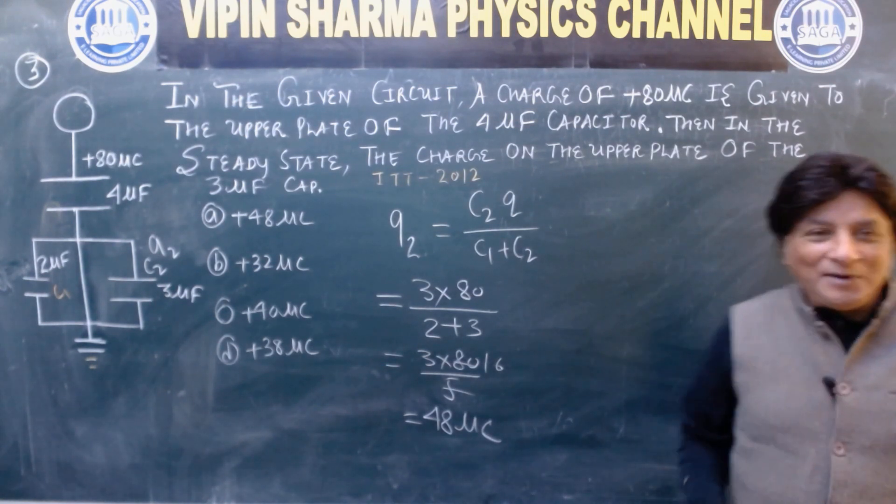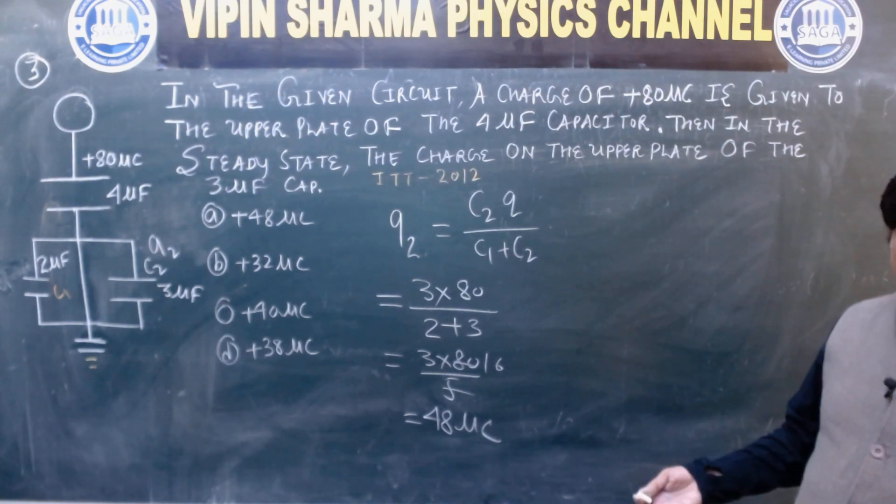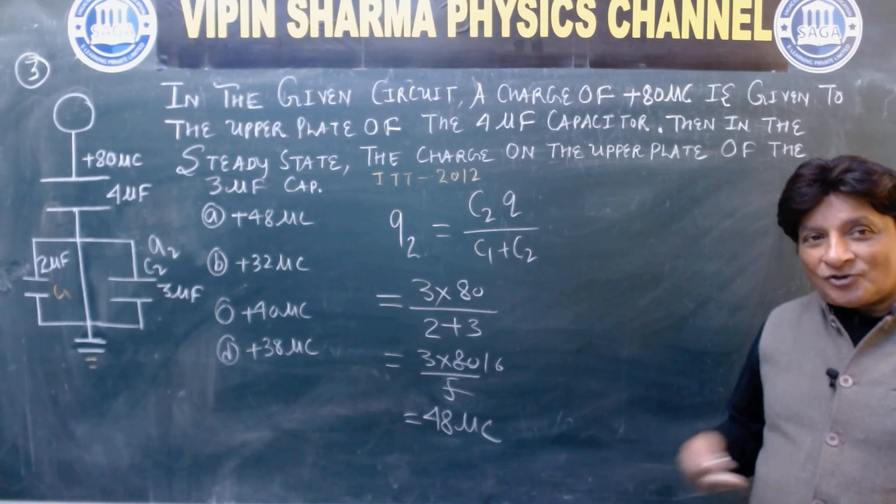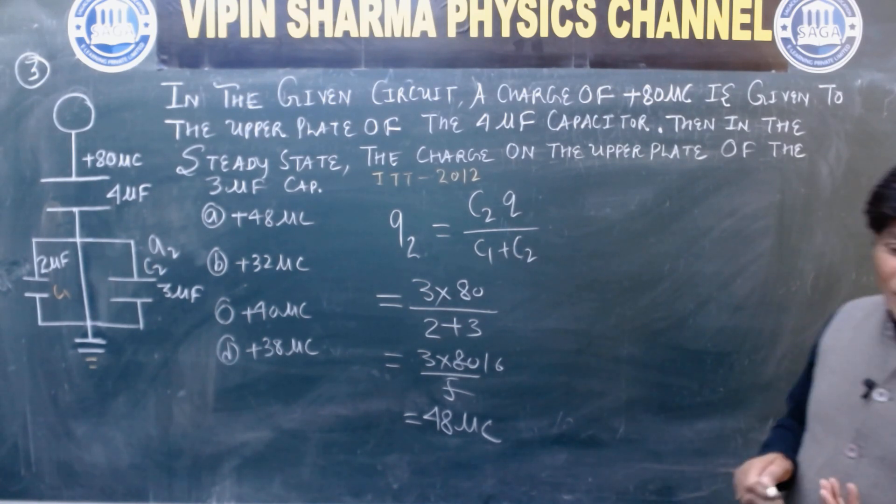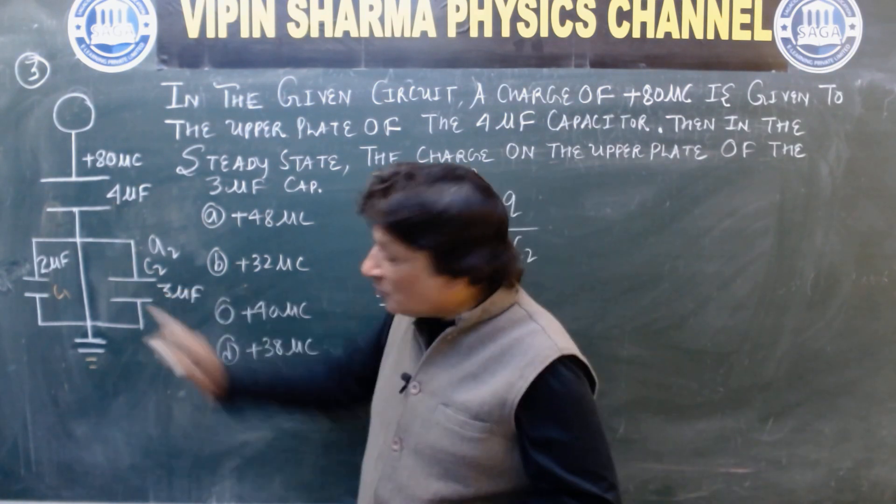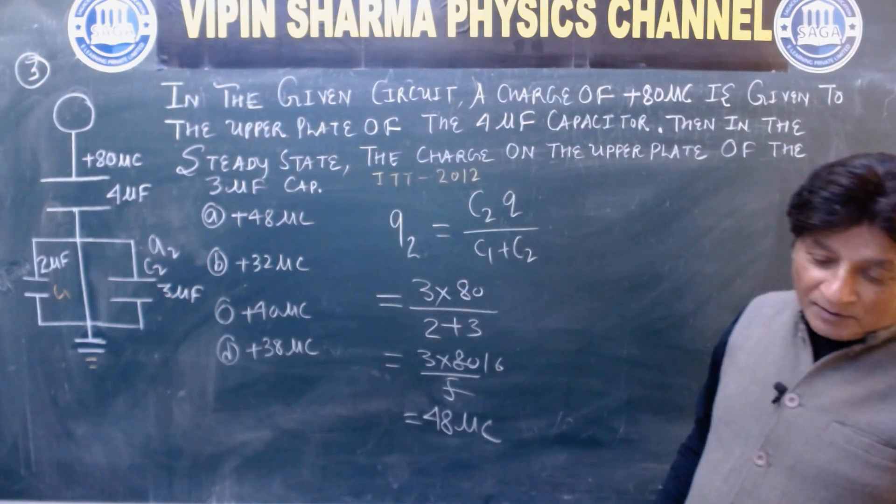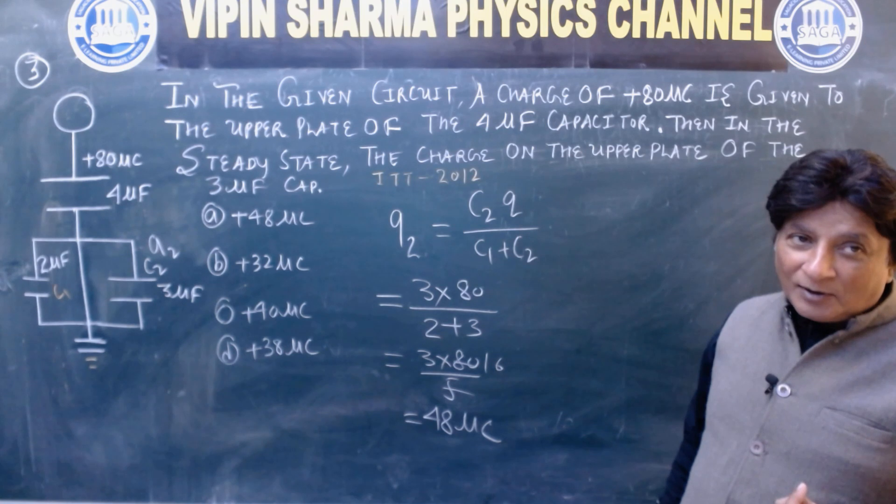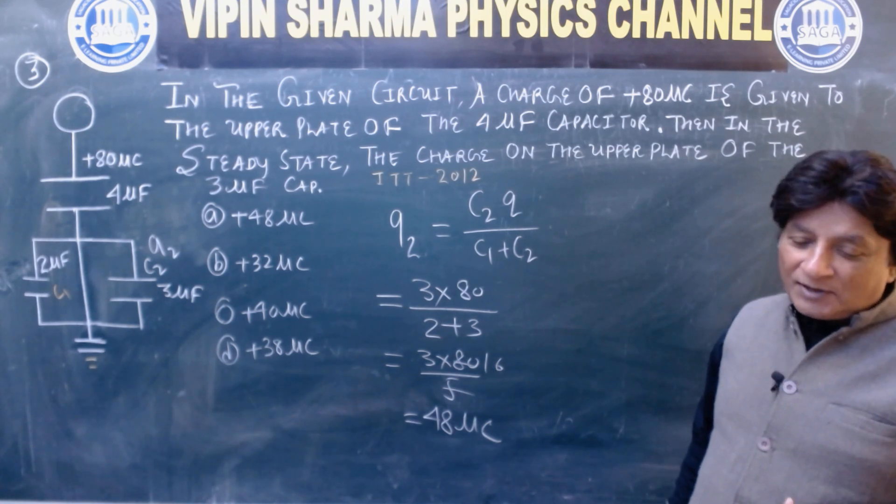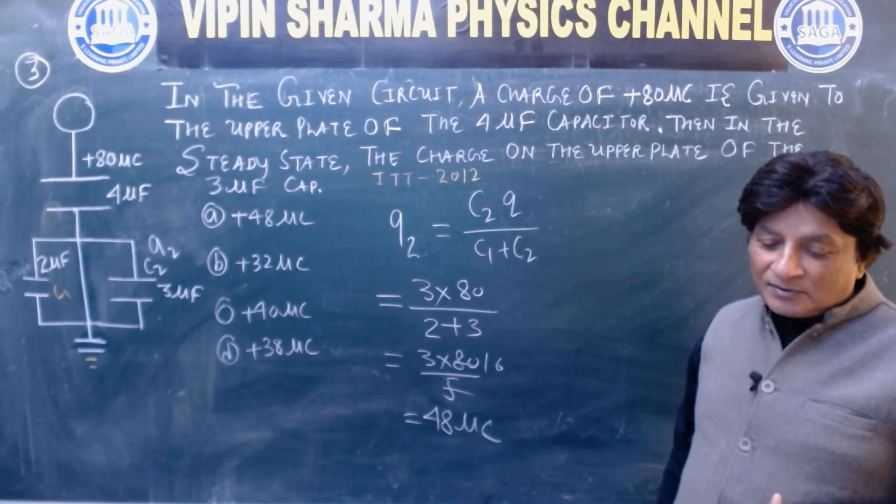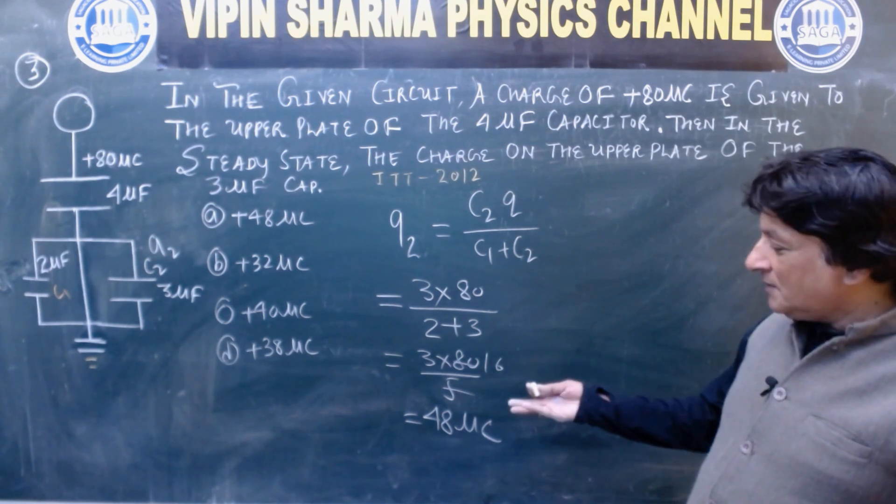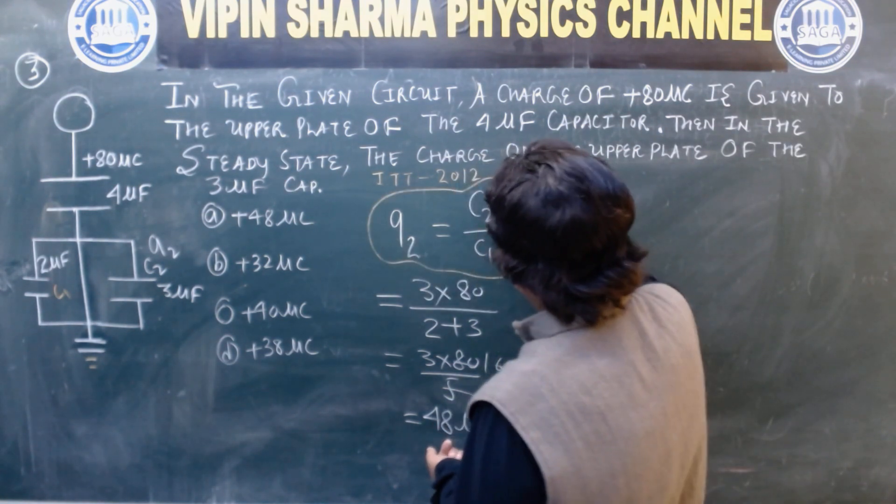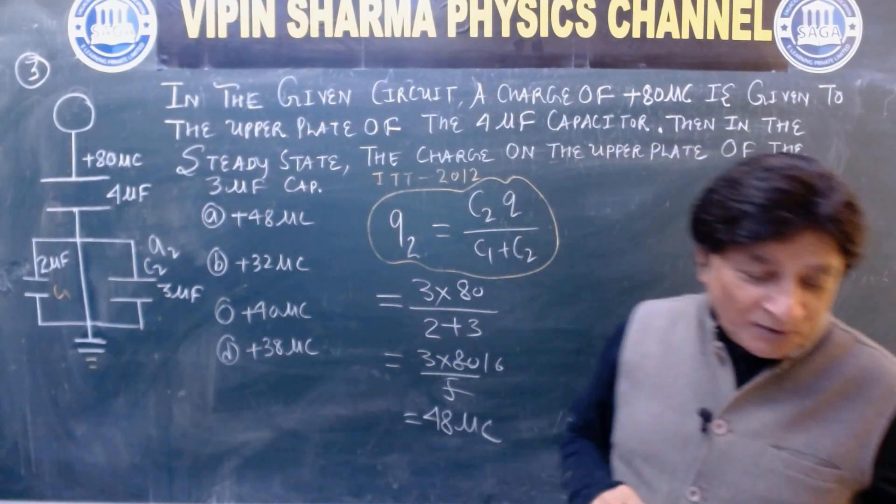Now see very carefully. I have solved this. How much time did it take? Less than, I mean in exam, just in seconds you solve this. See it's like this, C1 and C2 are in parallel. When C1, C2 are in parallel, then Q2, the charge on 3 microfarad, total charge Q. So what result came in front of you? Shortcut technique is Q2 equals C2 Q upon C1 plus C2.